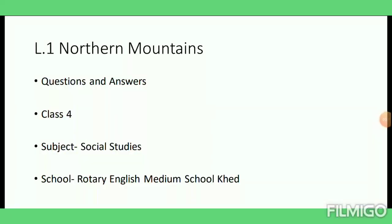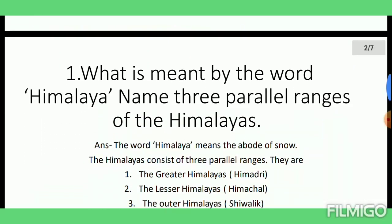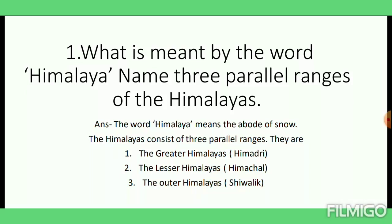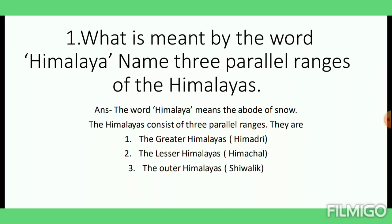Good morning, my dear students of class 4. Over the last two weeks, we were discussing lesson number 1 — Northern Mountain. Today we will be discussing questions and answers regarding this lesson. Question number 1: What is meant by the word Himalaya? Name the three parallel ranges of the Himalayas. In Sanskrit, Hima means snow and Alaya means house — literally meaning abode of snow. The Himalayas consist of three parallel ranges: the Greater Himalayas (Himadri), the Lesser Himalayas (Himachal) and the Outer Himalayas (Shivalik).